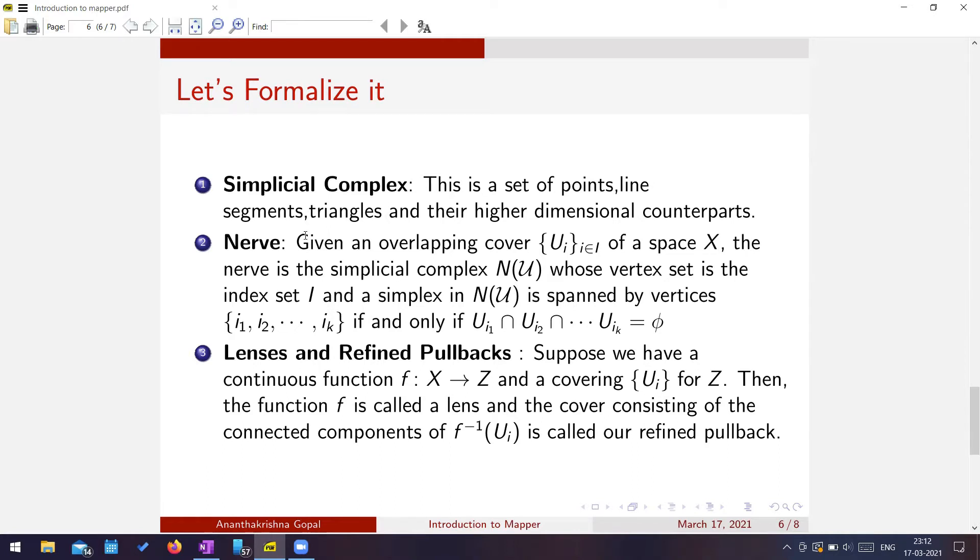And then we can talk about the nerve of an open covering. So I have an open covering {Ui} of a space X, and then the nerve is a simplicial complex whose vertex set is the index at i. And a simplex in nerve of u is spanned by vertices i1, i2 and so on till ik, if and only if U1 intersection U2 intersection so on till Uk is not empty. Sorry about the typo over here. It should be is not equal to empty set.